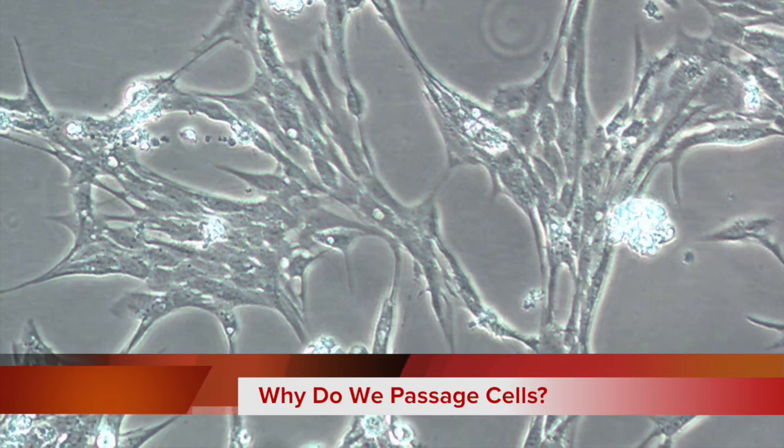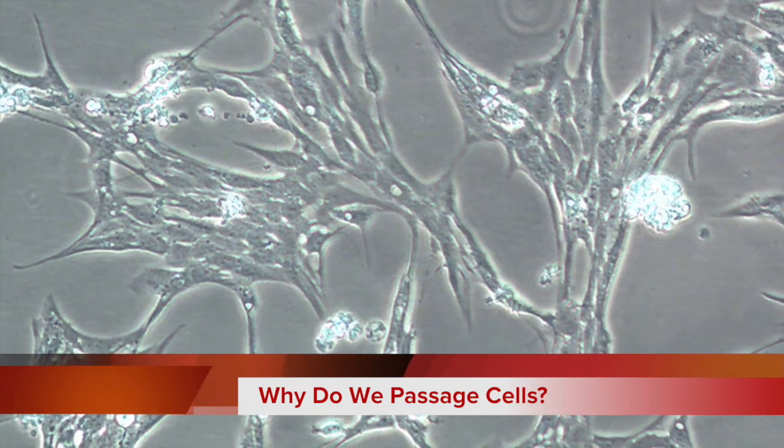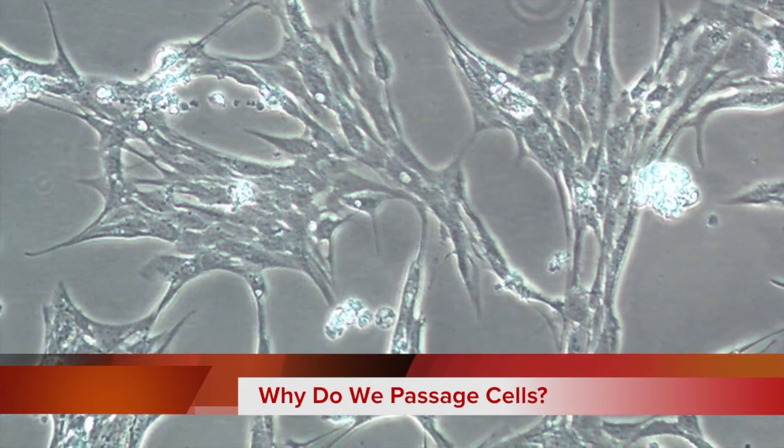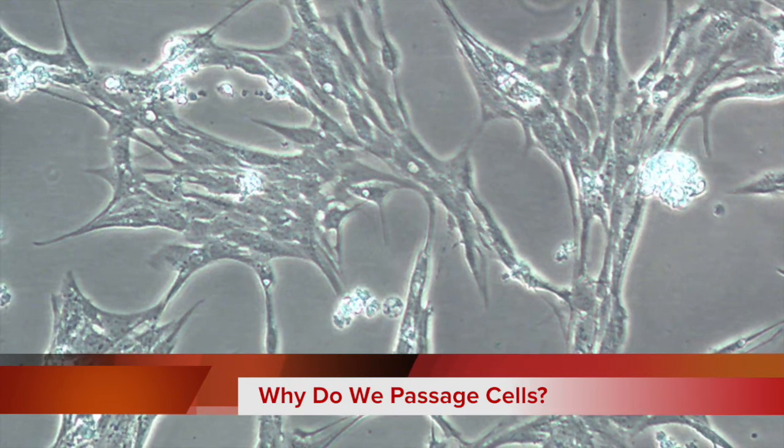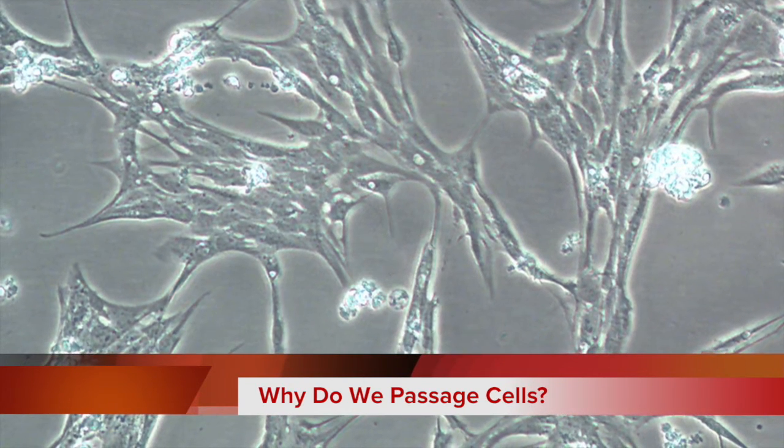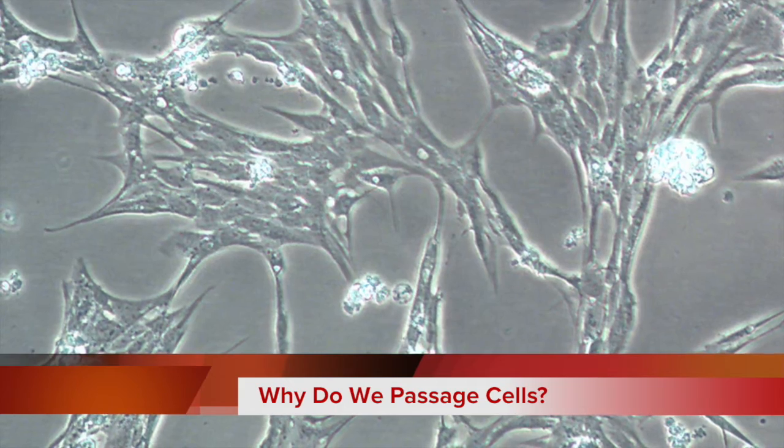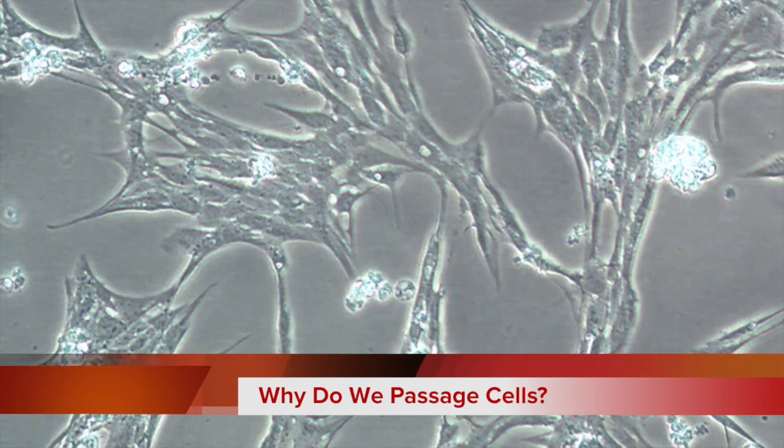After the cells are transferred to their new flask, growth will be slow, followed by an exponential growth known as the log phase. The goal of passaging is to maintain this log phase growth which will maximize the number of healthy cells available.